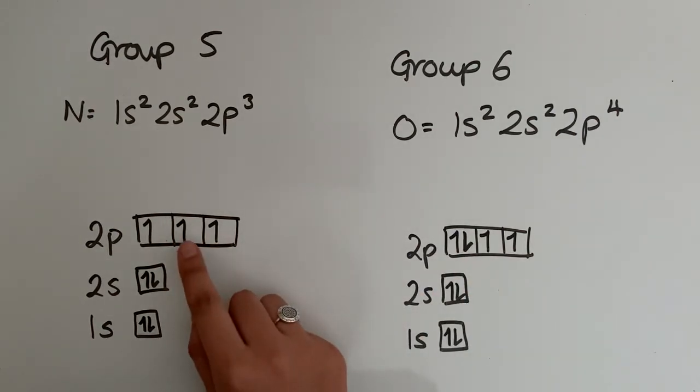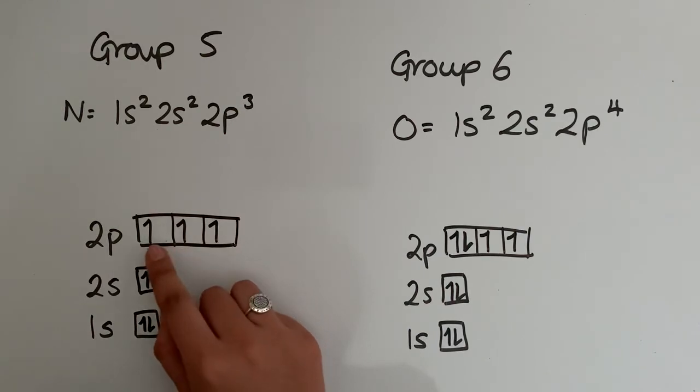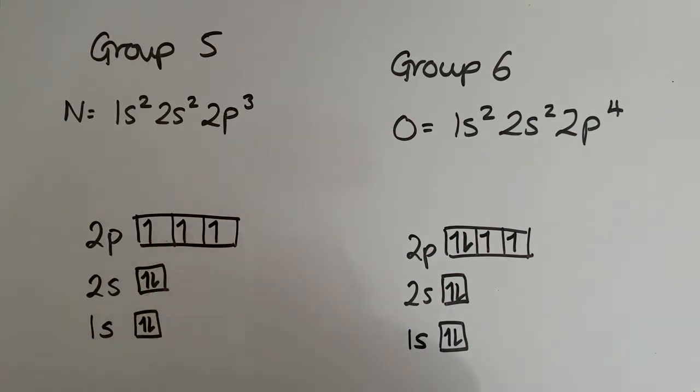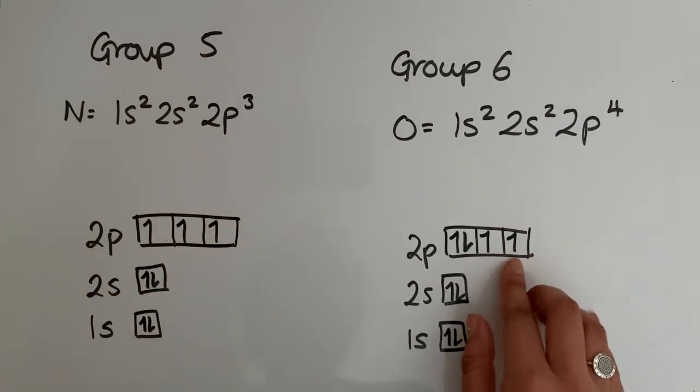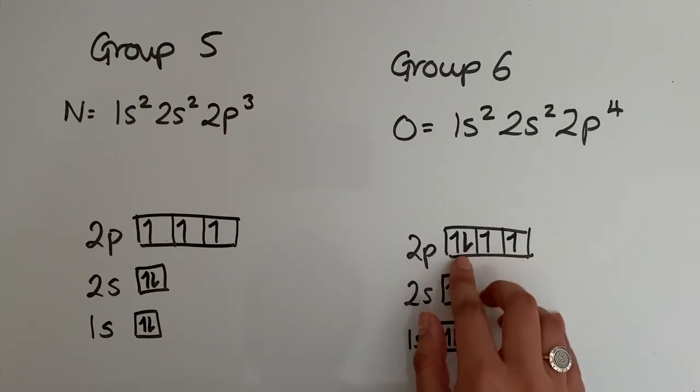These electrons here, the ones that are singly occupied, so each have one in each, there's no repulsion because one electron is in a different orbital. So this orbital has one electron in it, this one has one electron in it, this one has another. So there's no repulsion between those electrons. They're pretty happy where they are. These two over here are fine. There's no repulsion because they're in the orbital by themselves. Whereas these two here, there is a repulsion between the two.